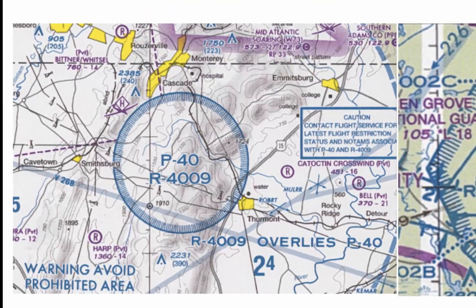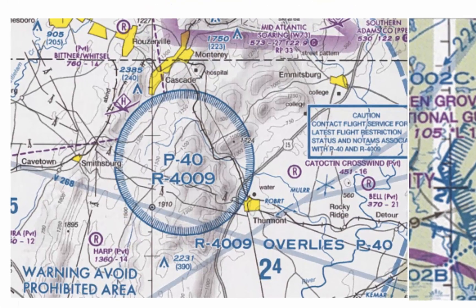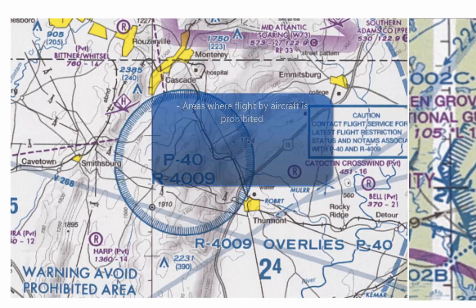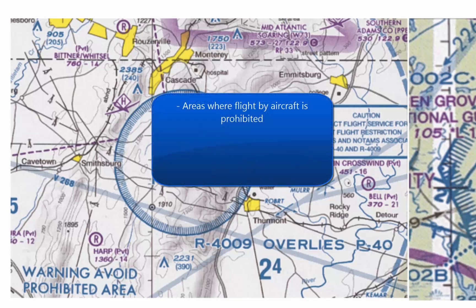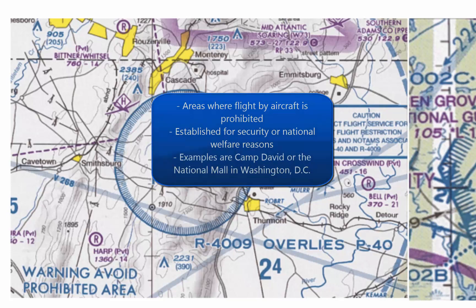The picture on the left illustrates a prohibited area. These are areas where flight by aircraft is prohibited. They can be established for security or national welfare reasons. Some examples are Camp David or the National Mall in Washington, D.C.